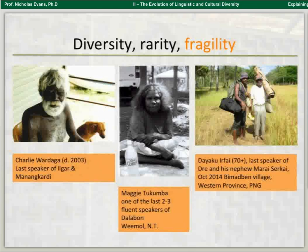One speaker in the case of Drei, which we didn't even know about until a couple of years ago. He walked out from his village in Papua New Guinea, keen to have people document his language — about 70 years old, walking for three days so we could start working on it. And then Charlie Waraga, who was the last speaker of Ilgar and Manangari and one of the last speakers of several other languages, unfortunately took a lot of that knowledge with him when he died in 2003. This lends a huge urgency to the task.